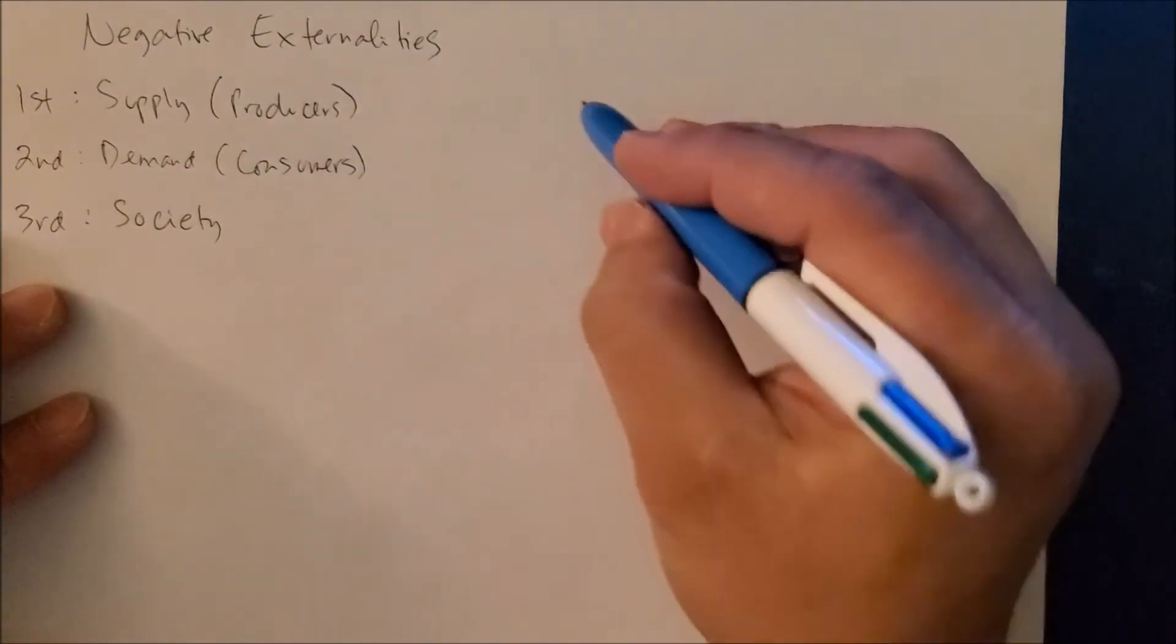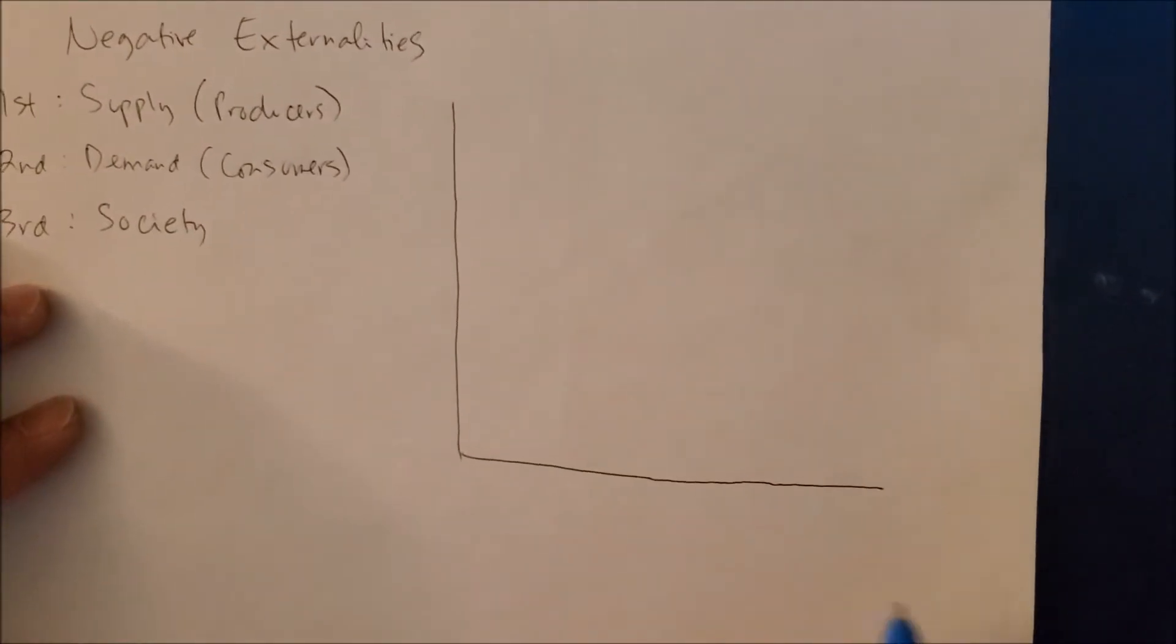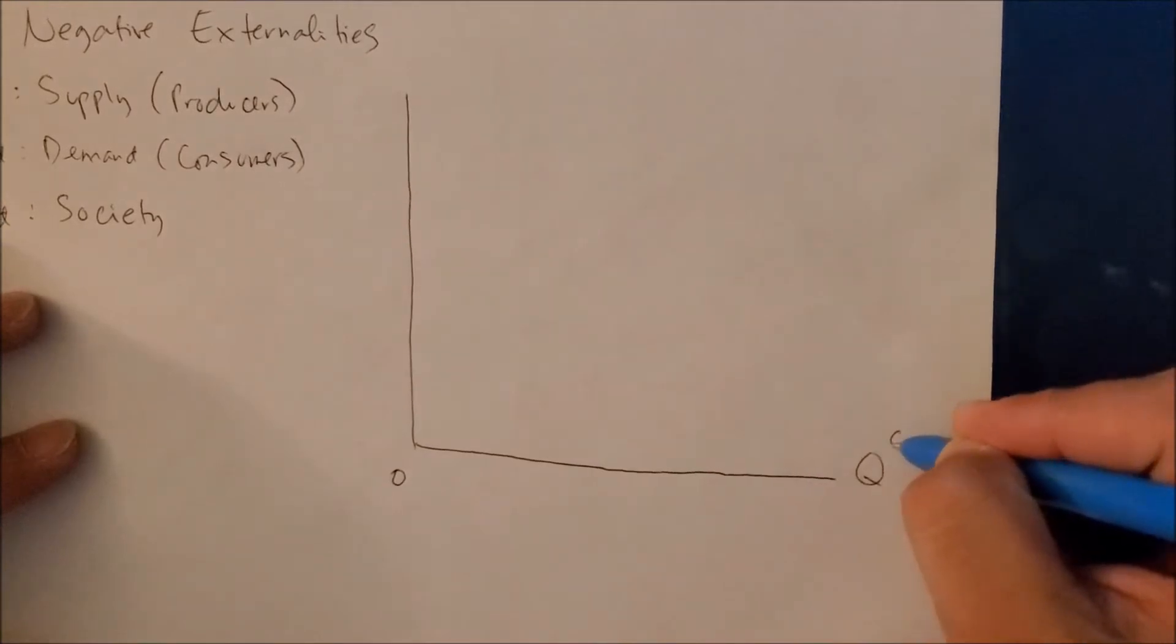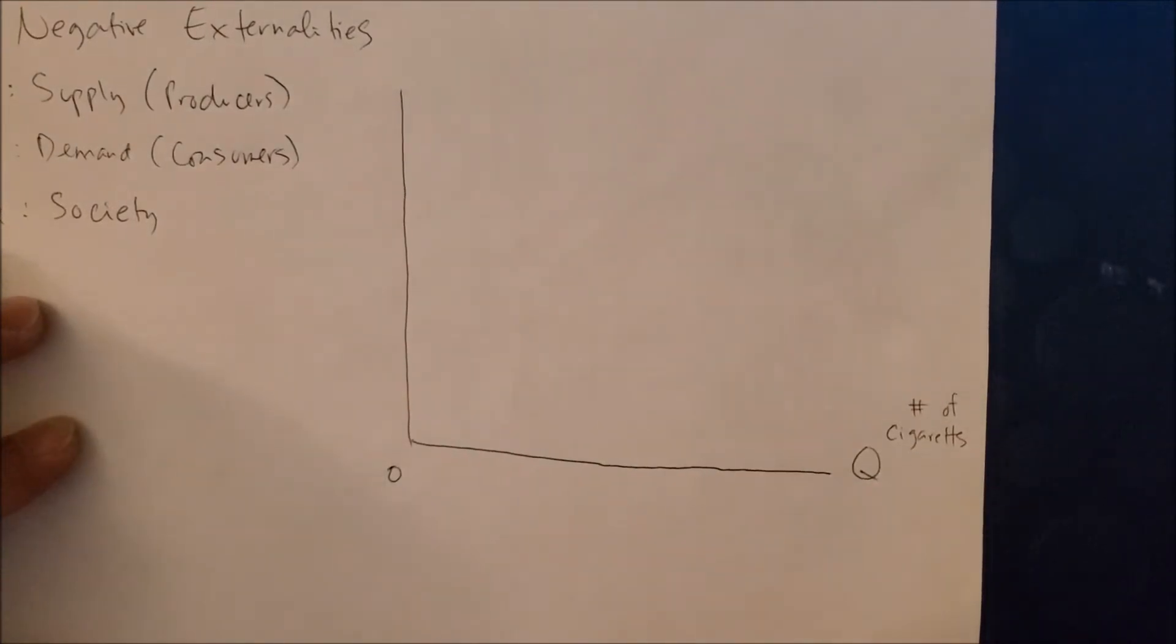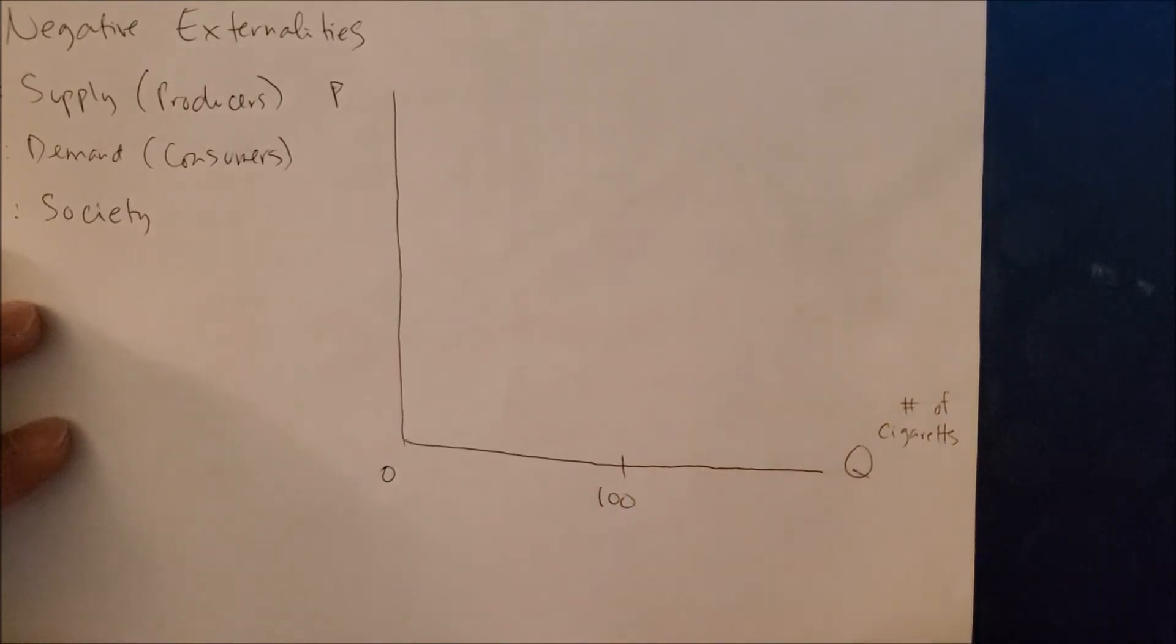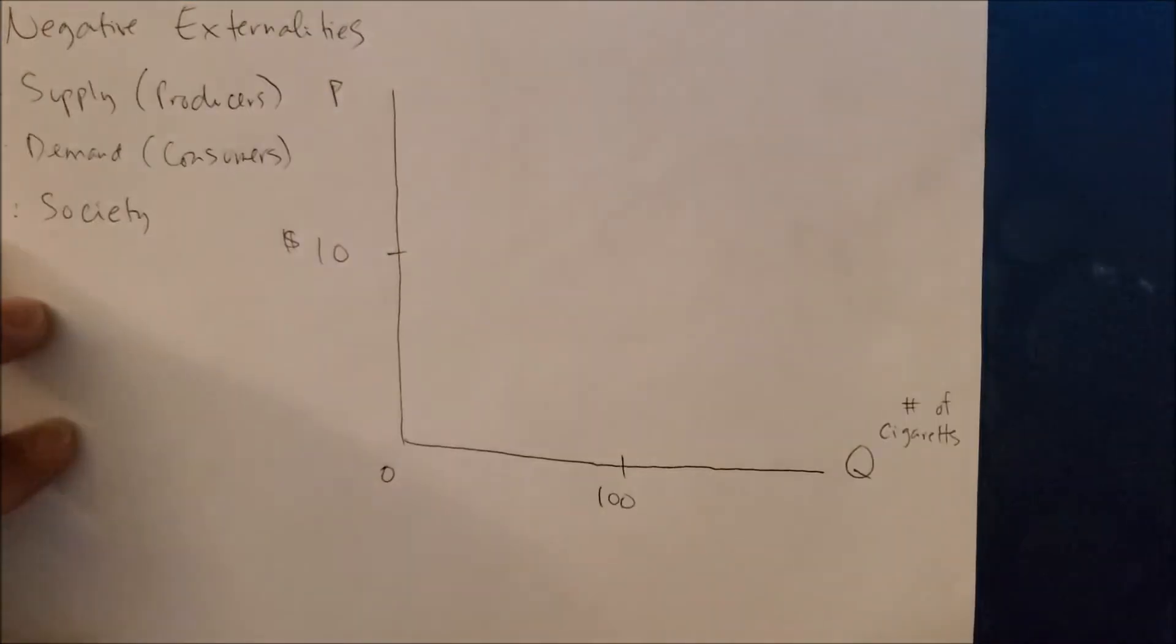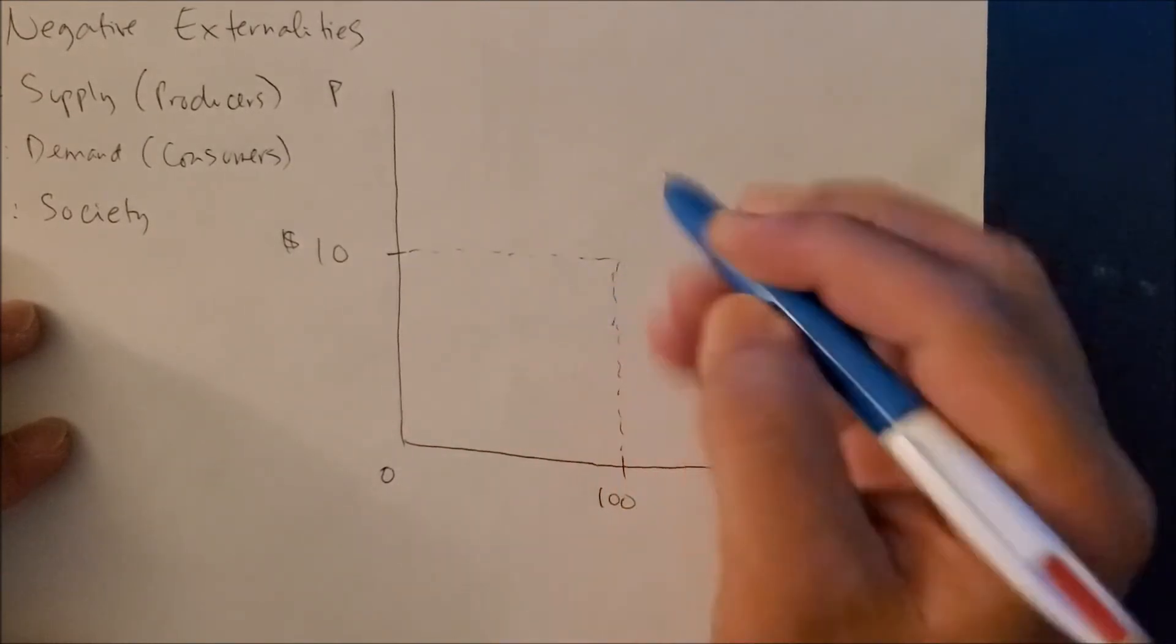We can use a typical consumer market and draw on the x-axis the quantity of goods produced. We can label this the number of cigarettes products produced by company X. On the y-axis we put the price, the price of cigarettes. We can make up the numbers and say 100 cigarette sticks at a price of let's say $10. Here we have point A where 100 cigarettes and $10 intersect point A.